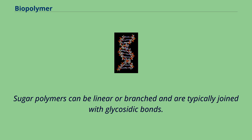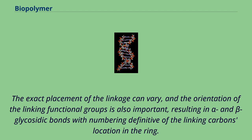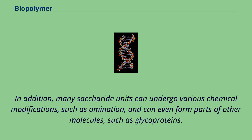Sugar polymers can be linear or branched and are typically joined with glycosidic bonds. The exact placement of the linkage can vary, and the orientation of the linking functional groups is also important, resulting in alpha and beta glycosidic bonds with numbering definitive of the linking carbon's location in the ring. In addition, many saccharide units can undergo various chemical modifications, such as amination, and can even form parts of other molecules, such as glycoproteins.